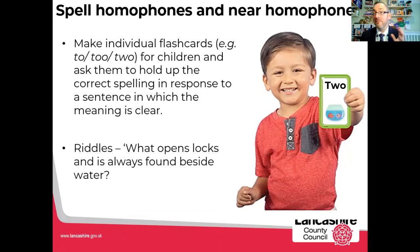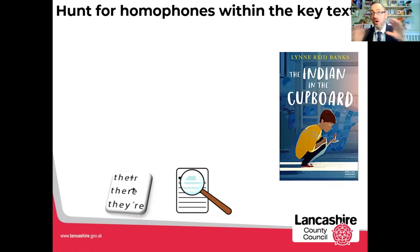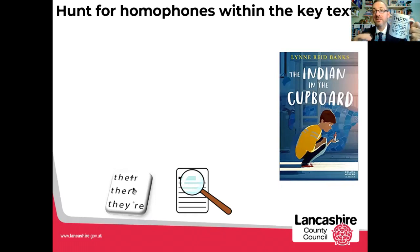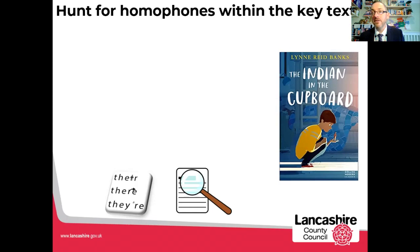Another lovely strategy could be riddles: 'What opens locks and is always found beside water?' — can they solve that riddle, select and spell that homophone correctly? One of my favourite books is The Indian in the Cupboard, so I'm going to hunt for homophones within this key text — hunting for there, their and they're. On my Singing, Learning, Sticky blog I've created and shared some songs we can use with there, their and they're. Let's dig in and see if we can help children spell them correctly and use the correct one when hunting for homophones within a text.